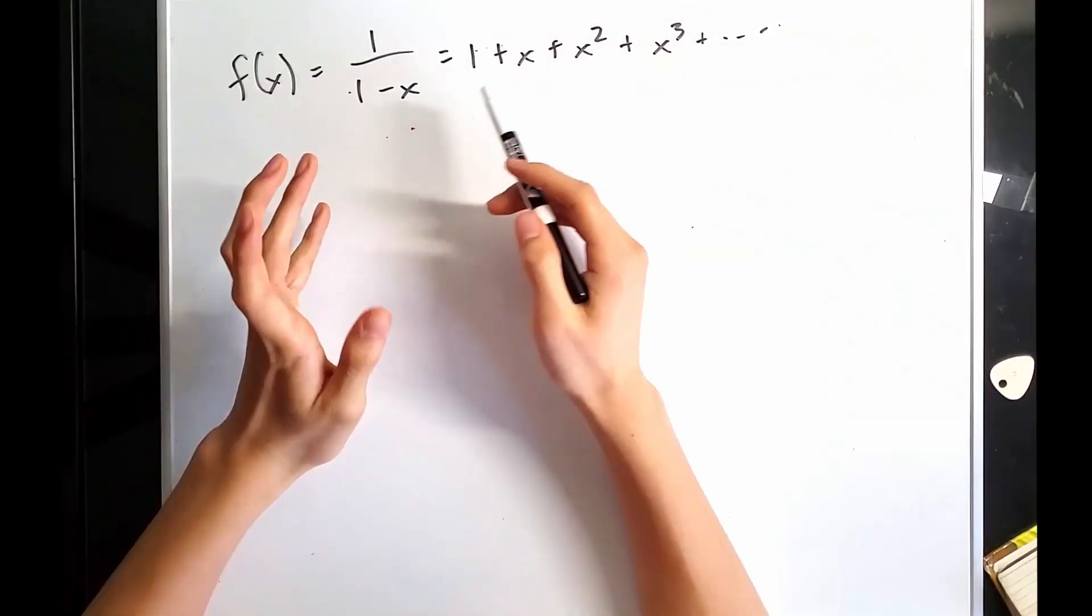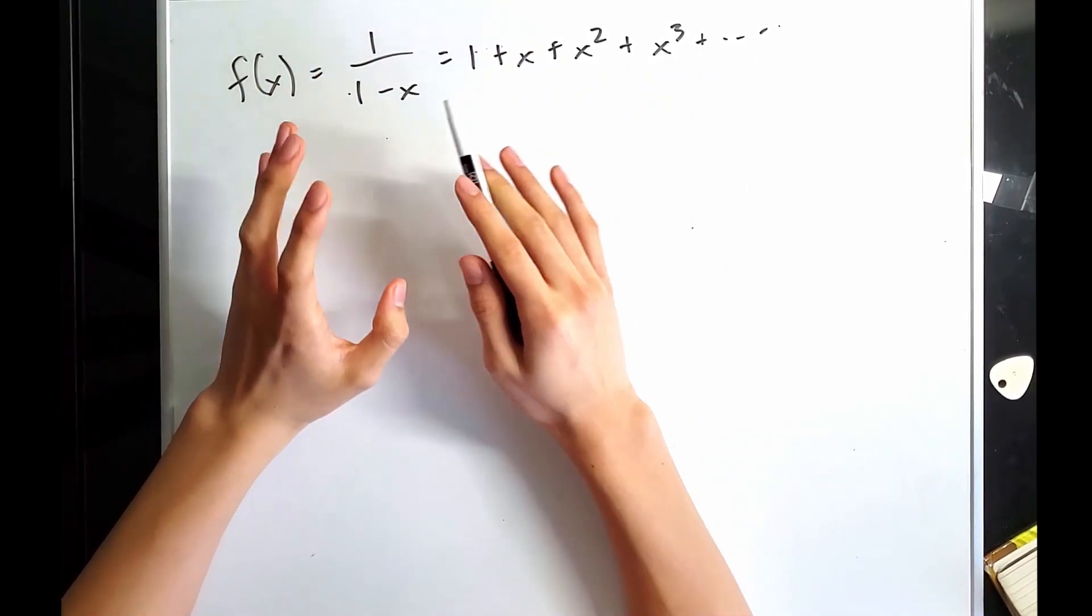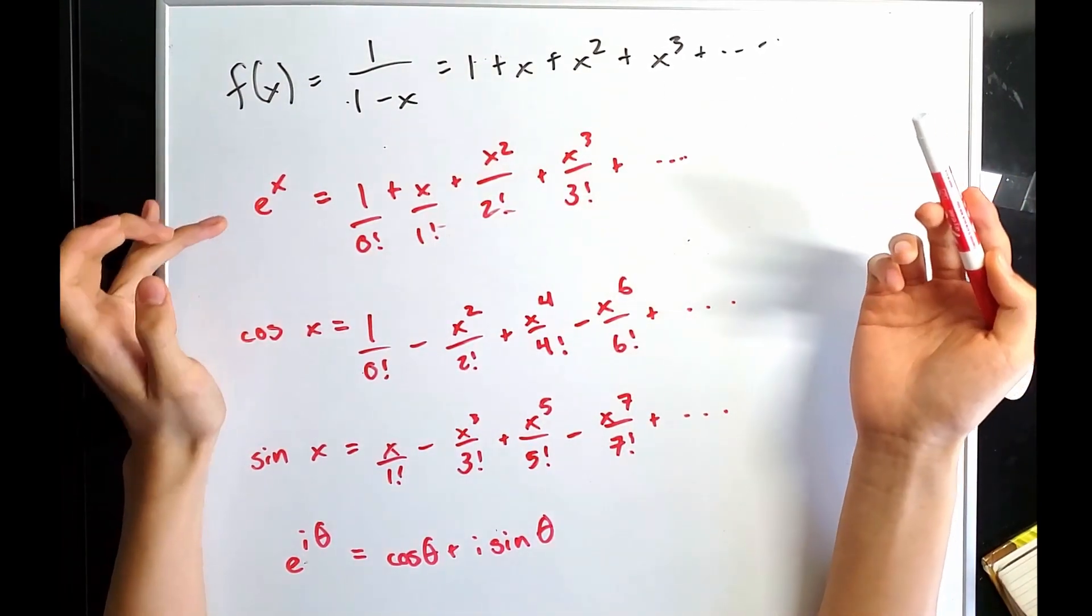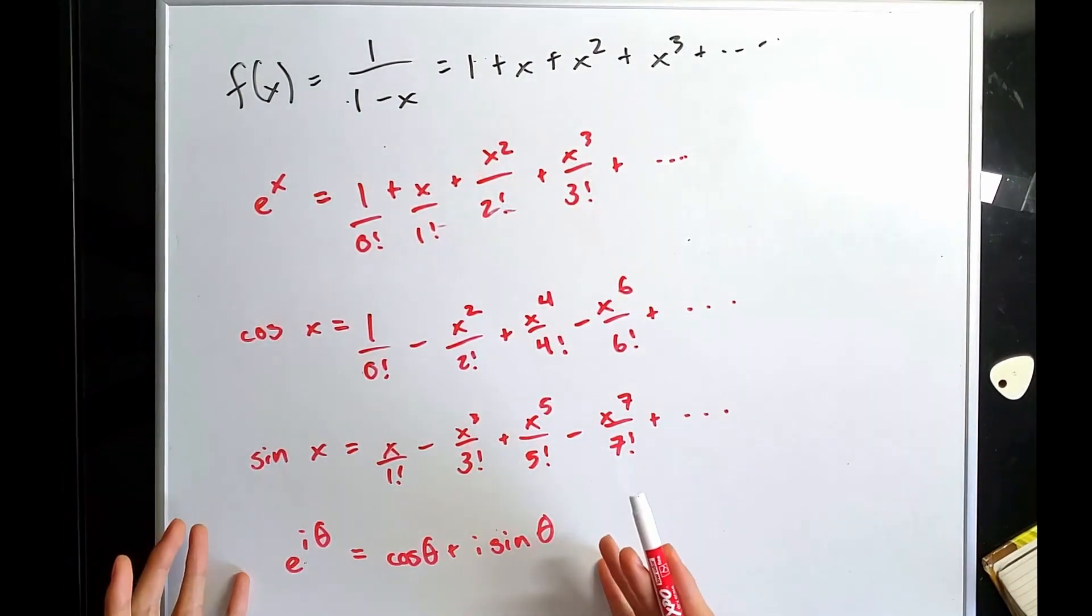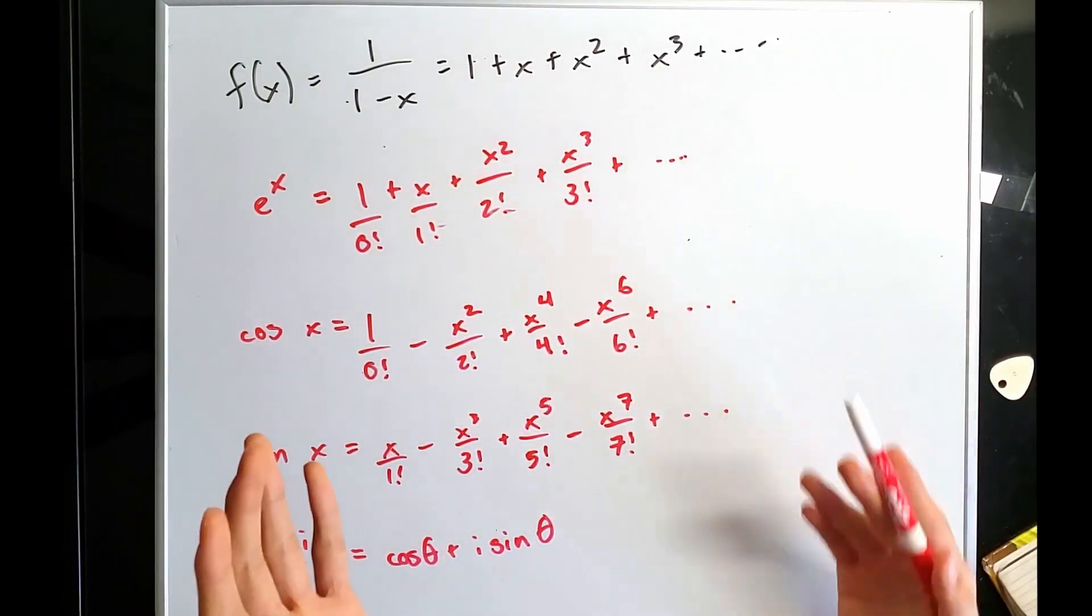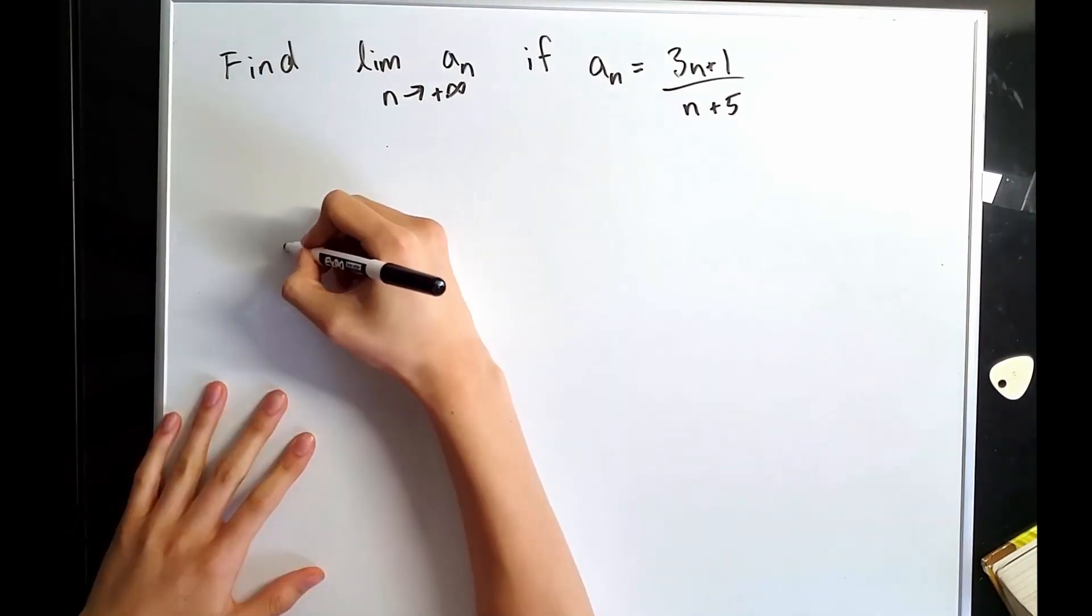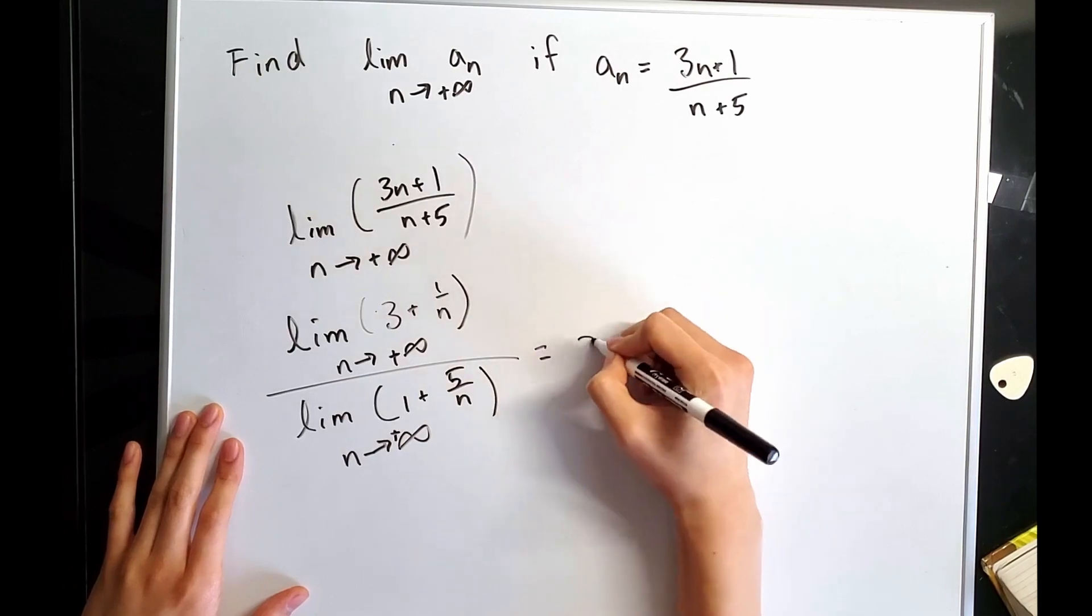These are generating functions. You can express infinite power series in a simple closed form. We take our definition of geometric series and apply it to functions. We follow that the exponential series e to the x is equal to this. Here's cosine, sine, and e to the i theta, which follows from all three of these. We can use these for approximation. So if you find the limit of this sequence, you can substitute it in. So first divide both sides by n. You can clearly see that this limit is equal to three.